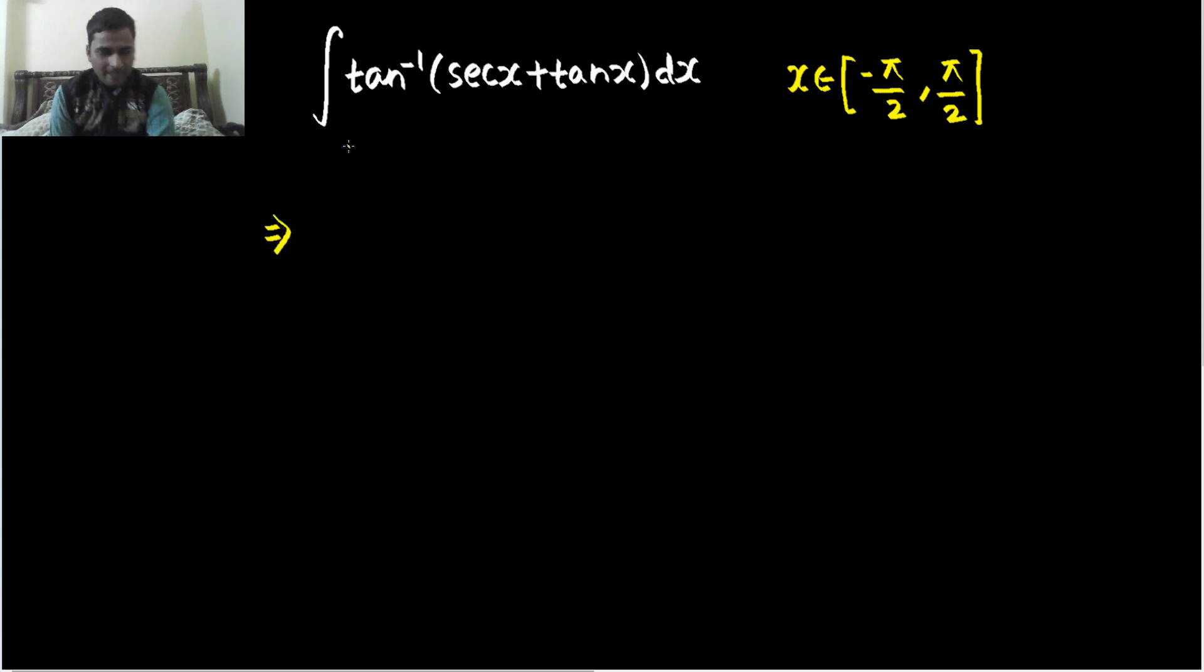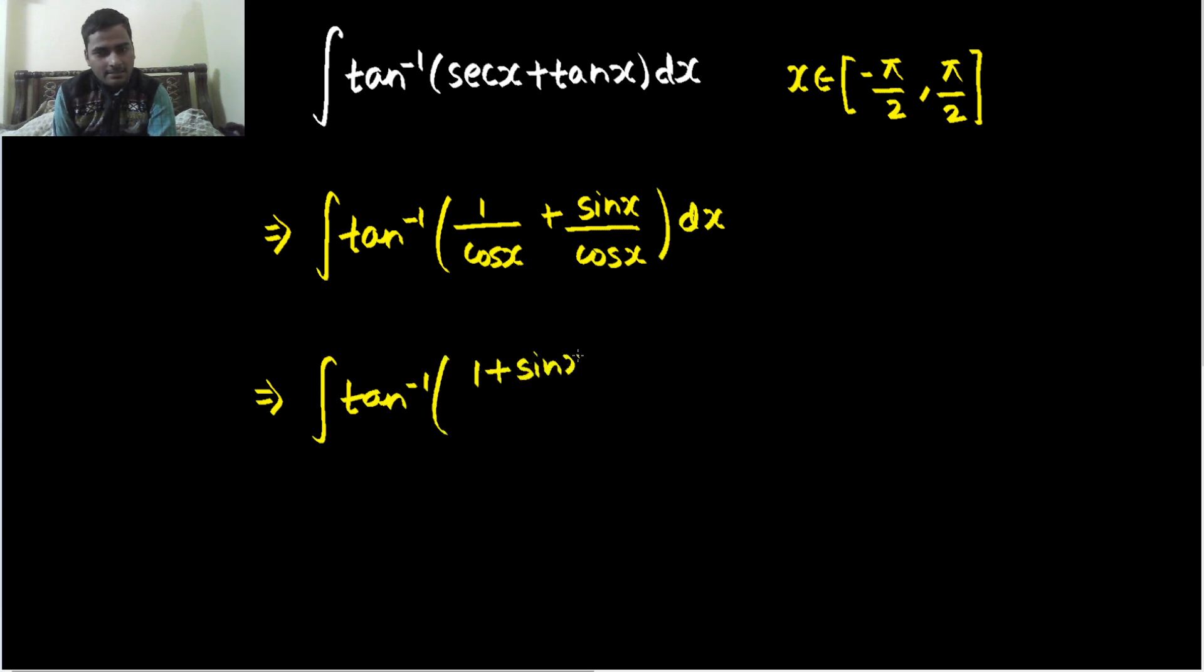So first of all, we need to simplify that's understood to you. We don't have a direct formula for secant x plus tan x. So we will try to simplify it further by writing it in terms of sine and cos. So integral of tan inverse, secant x is 1 by cos x and tan x is sine x divided by cos x.